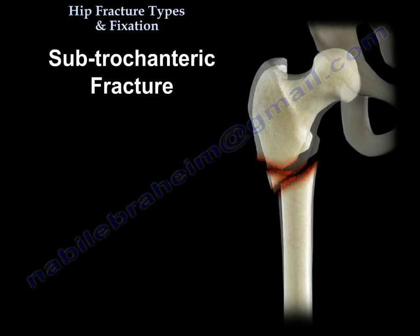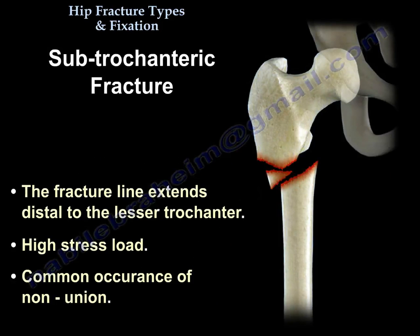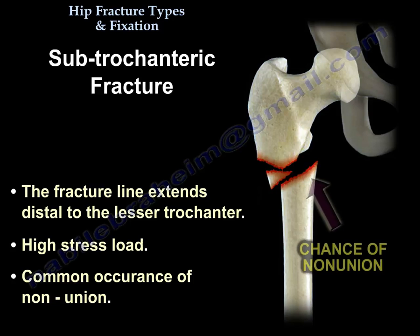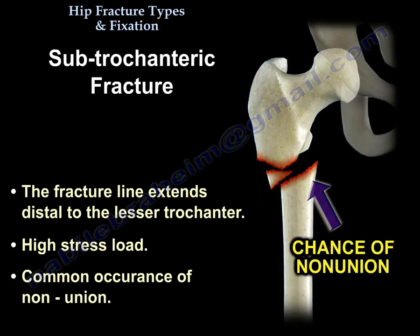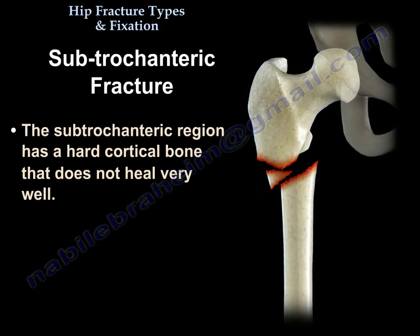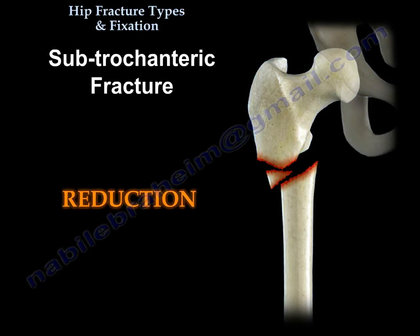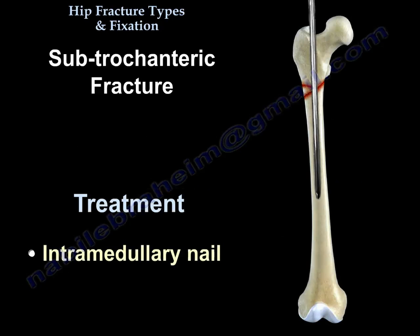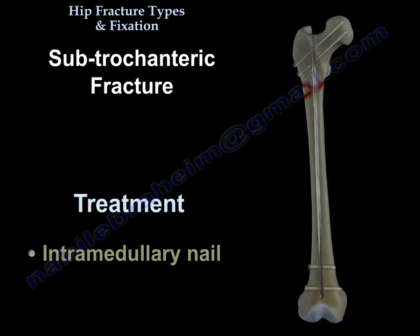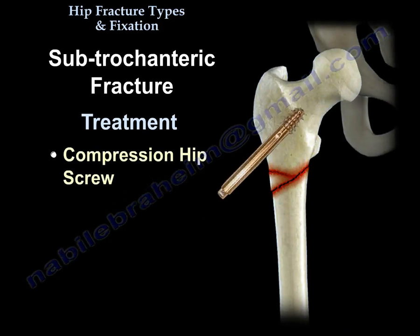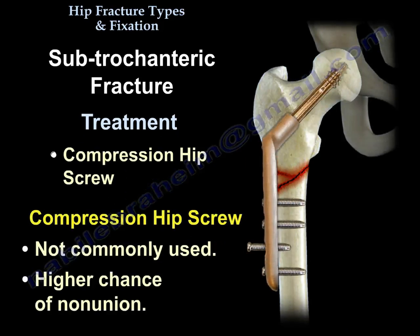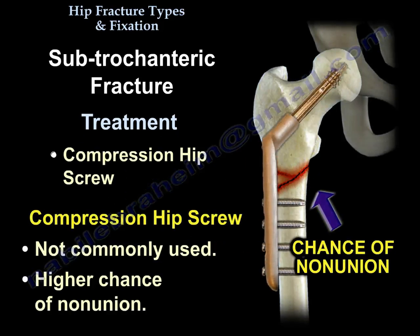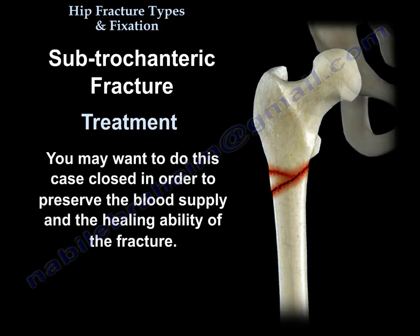In the subtrochanteric fracture, the fracture line extends distal to the lesser trochanter. This region is subjected to high stress load and non-union can occur quite frequently, as the subtrochanteric region has hard cortical bone that does not heal well. The majority of cases are treated by intramedullary nail. You may want to perform this closed to preserve the blood supply and healing ability of the fracture.